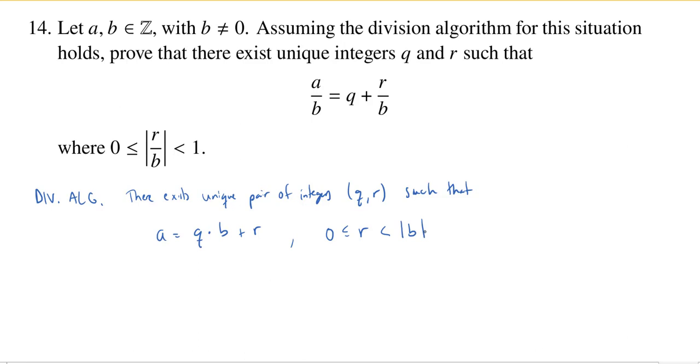Once we have this, it's actually going to be quite straightforward to prove what we need to prove, which is that there exists unique integers Q and R, hey, we have those already, such that A over B is equal to Q plus R over B. And there's this condition.